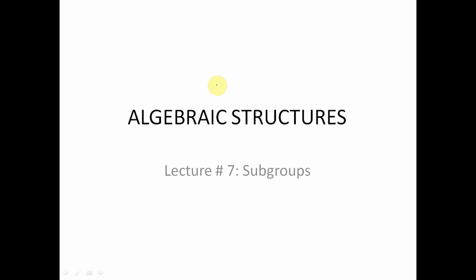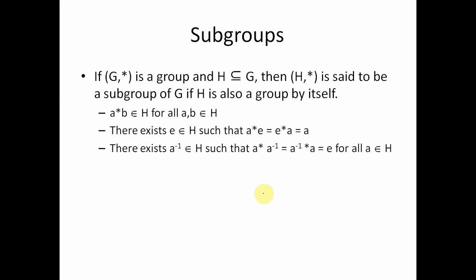In this session we will be talking about another extension on a group, that is subgroup. If G,* is a group, that means G is a non-empty set and * is a binary operation that needs to be closed, that needs to be associative. There must exist an identity element in G for the operation *, and every element of G must have an inverse also from G. If all these four properties are satisfied then it will be a group, and if additionally the * operation is also commutative then it becomes an abelian group. But for subgroup it is not necessary that the group be an abelian group.